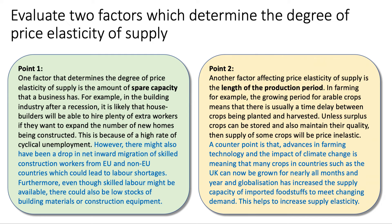However, a counterpoint is that we're seeing significant advances in farming technology, and the impact of climate change means crops can now be grown in countries including the UK for nearly all months of the year. Storage has become more easy and accessible, and globalisation has also increased the supply capacity of imported foodstuffs to meet changing demand. So globalisation, shorter production periods, and better storage facilities all help to increase supply elasticity in this market.